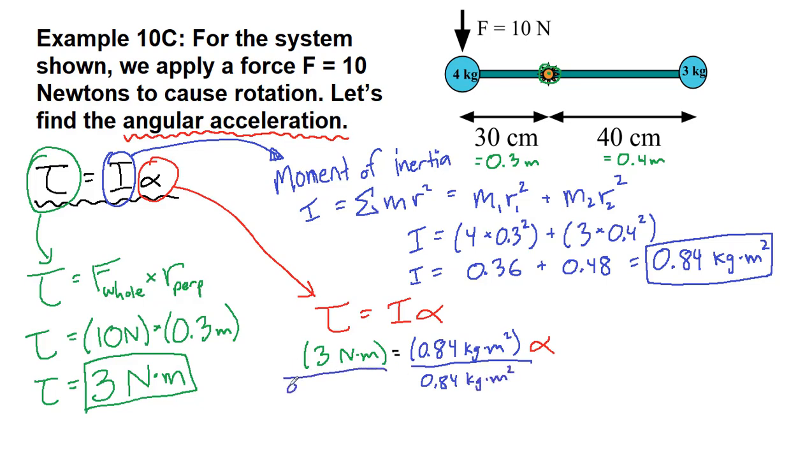Both sides. 0.84 kilograms times meters squared. So all that goes away on the right side, and we're left with the angular acceleration alpha. And on the left side, we get 3.57. And then the units on angular acceleration we know are supposed to be radians per second squared, but we're going to make sure that we understand where that actually came from on the right side here.